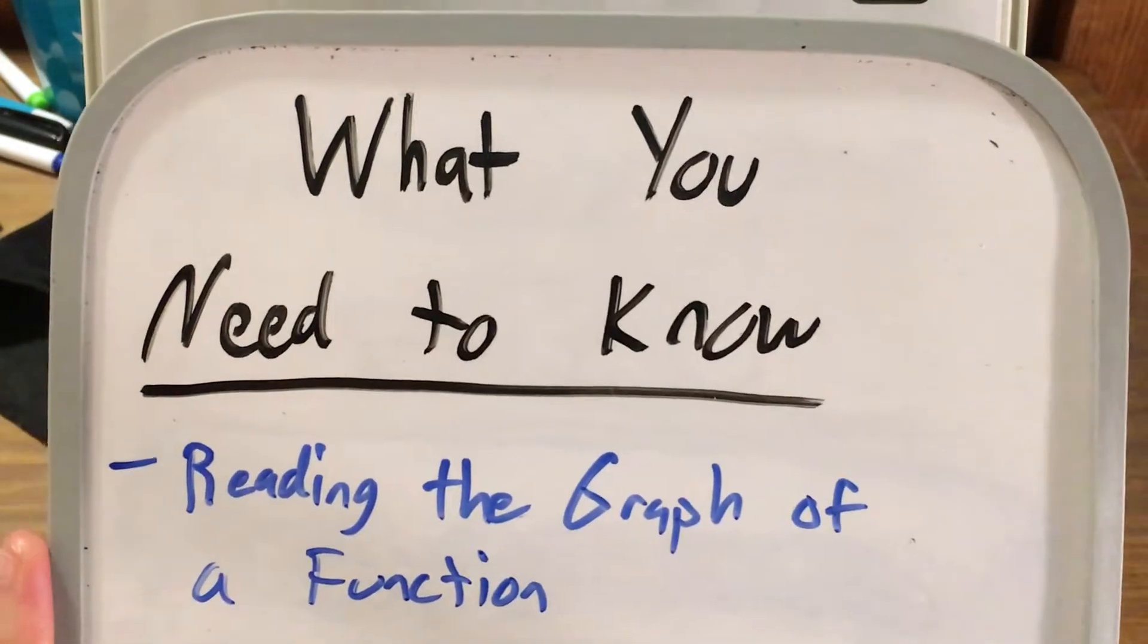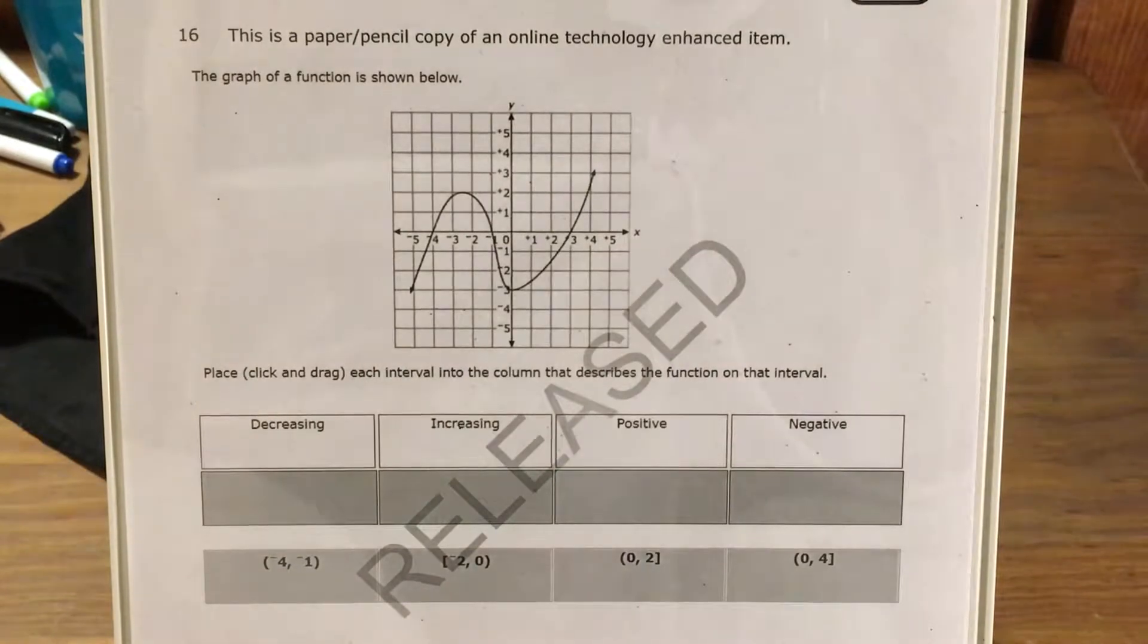So the big skill this is testing is reading the graph of a function. Now to do a question like this, I think we should just look at each interval that it gives us and see which possibilities or which descriptions it can match with.